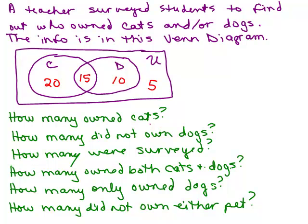How many owned cats? If we look at the circle that has the cats, there are two different places where we have numbers. There's the 20 over here — these people have cats but don't have dogs. And then there's the 15 in the intersection — people that have both cats and dogs. So altogether, adding those two numbers, that represents 35 students who own cats.